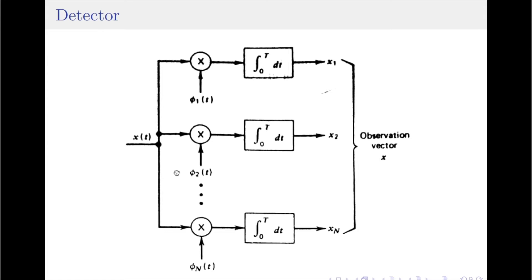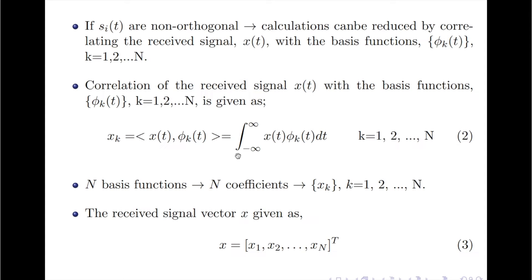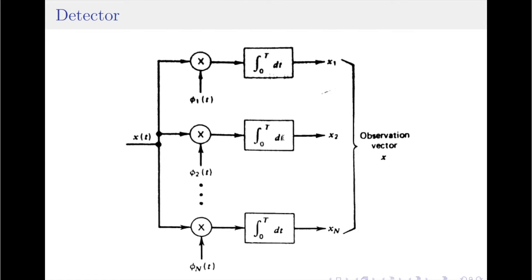Starting with the detector part: the detector consists of a bank of N product integrators, also called correlators. Each correlator is supplied with a corresponding coherent reference signal, which is an orthonormal basis function. These basis functions are generated locally at the receiver. Each correlator generates a coefficient X_j for j from 1 to N, representing the correlation between the received signal X of t and the corresponding basis function phi_j of t, as indicated in equation 2. Since there are N correlators operating on the received signal X of t, we obtain N coefficients, which are used to produce the observation vector X as per equation 3.